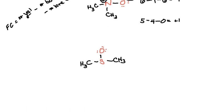And then in this structure here, sulfur has six valence electrons. It has three bonds and two lone electrons, so it has a plus one formal charge.